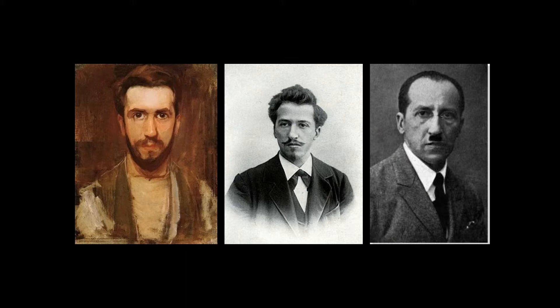Here are some images of Piet Mondrian throughout his life. On the left is an early self-portrait, then we have an actual photograph of him in the mid-years, and on the right is near when he lived in New York near the end of his life. He was a Dutch painter, born in the Netherlands in 1872, and he died in New York in 1944. Mondrian is one of the founders of the Dutch modern movement called De Stijl, and he's recognized for the purity of his abstractions and the methodological practice by which he arrived at them. He radically simplified the elements of his paintings to reflect what he saw as the spiritual order underlying the visible world, creating a clear universal aesthetic language within his canvases.